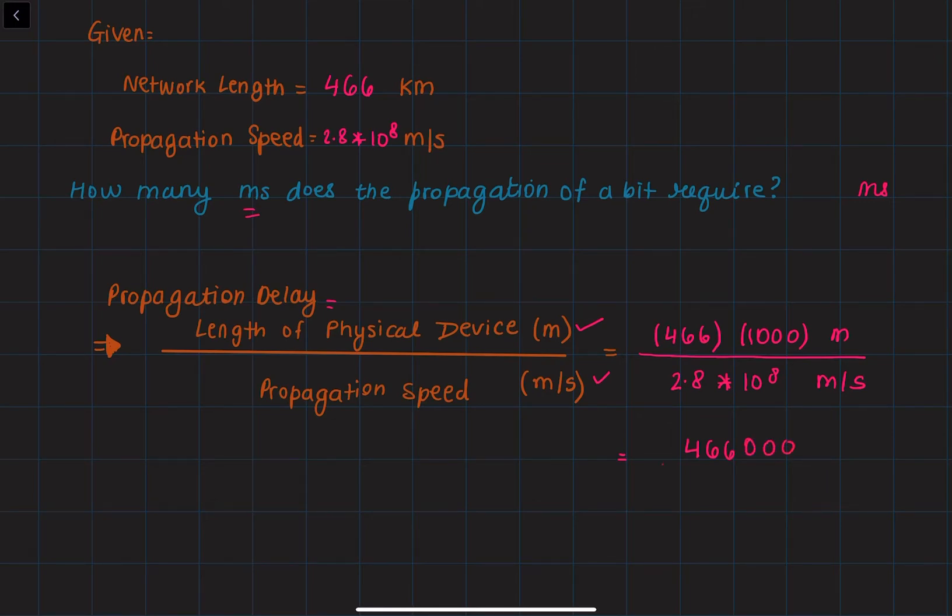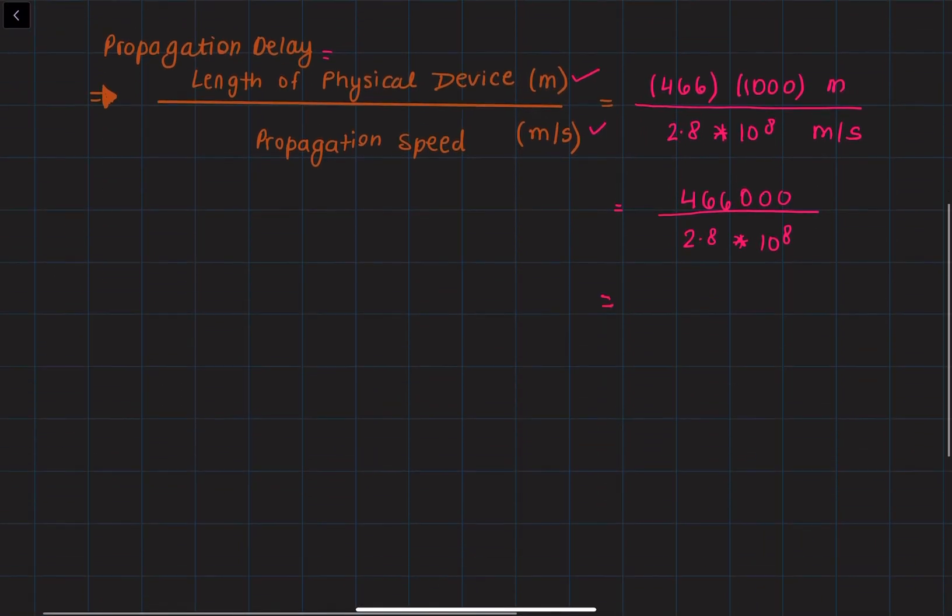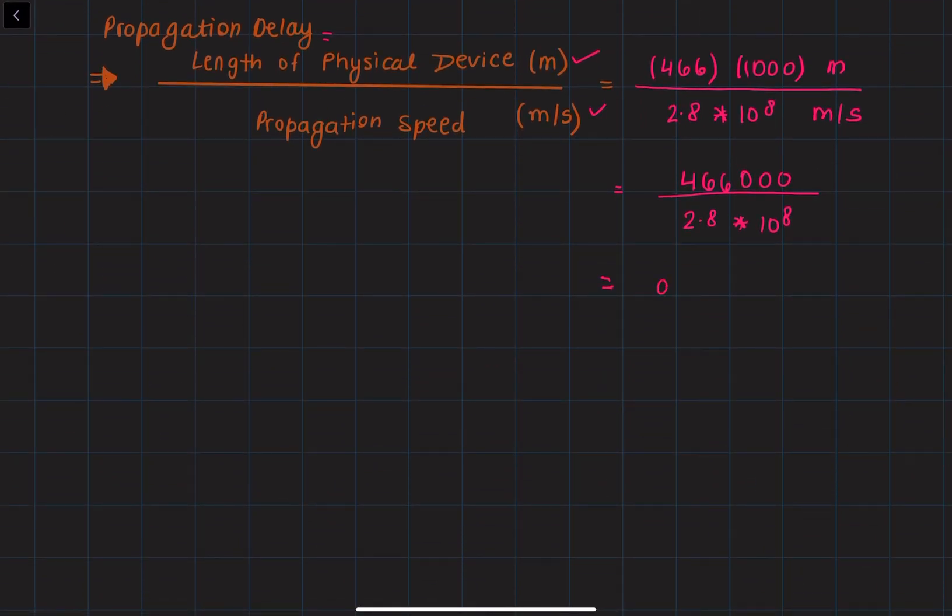divided by 2.8 × 10^8, which will give us 0.001664 seconds. Then converting that into milliseconds will be approximately 1.66 milliseconds.